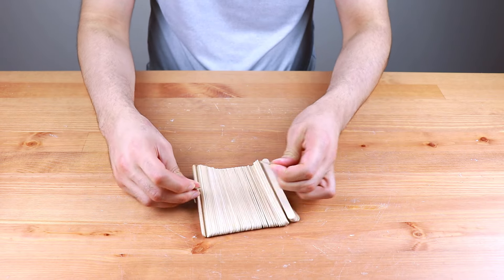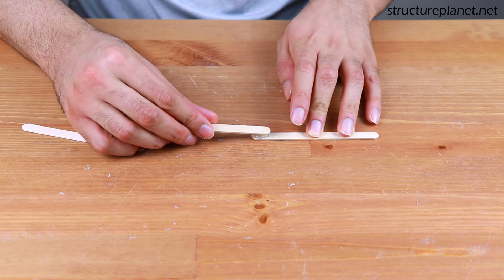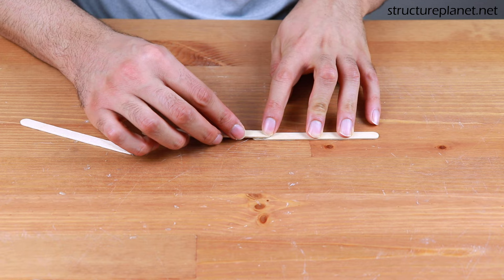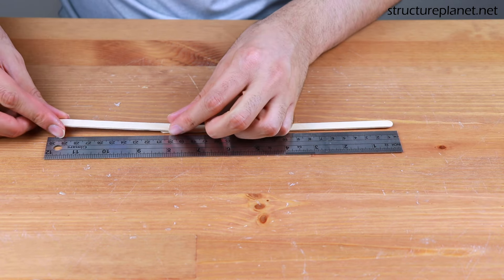Hello everyone, in this video we will make a simple but strong bridge out of popsicle sticks. We will need 50 sticks to complete this bridge and this should take less than an hour to make. Let's get started.